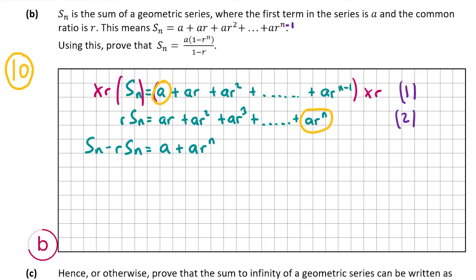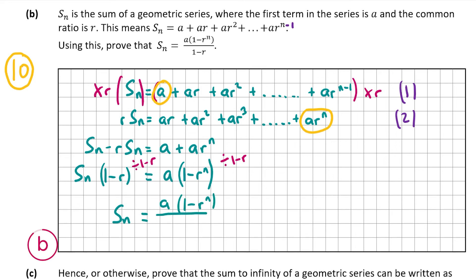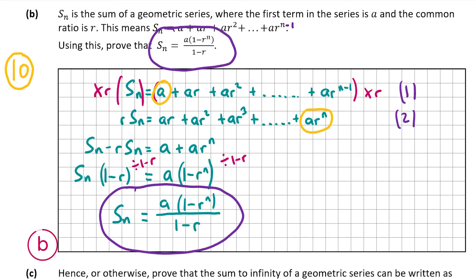Factorizing both sides: S(n)(1 minus r) equals a(1 minus r^n). Dividing both sides by (1 minus r) gives S(n) equals a times (1 minus r^n) over (1 minus r), which is exactly what we had to prove. So we've proven that S(n) equals a(1 minus r^n) over (1 minus r), and that's our answer for part b.